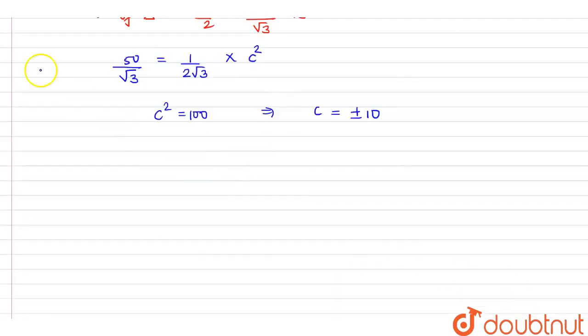Now, from here we can say that the equation of the line is y equals minus root 3x plus minus 10. We can rewrite this as root 3x plus y plus minus 10 equals 0.